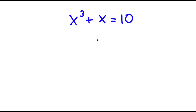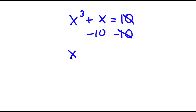So in this problem, I have x to the power of 3 plus x equals 10. I'm going to first start by subtracting 10 on both sides. So now I have x to the power of 3 plus x minus 10 is equal to 0.